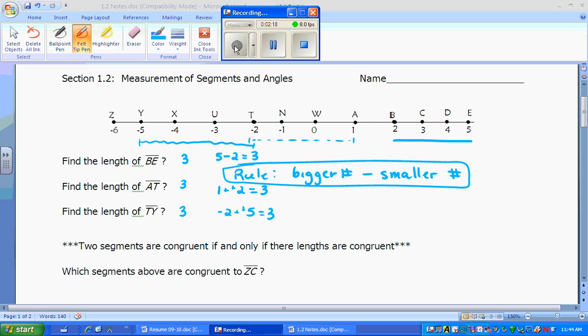Now that we know they all have the same length, we go on to this idea that two segments are congruent if and only if their lengths are the same. They have to be congruent. So when we look at this, it says, which segments above are congruent to ZC? Well, ZC goes from 3 to negative 6, so that has a length of 3 minus negative 6. So that is 9. It has a length of 9. What other ones have a length of 9?